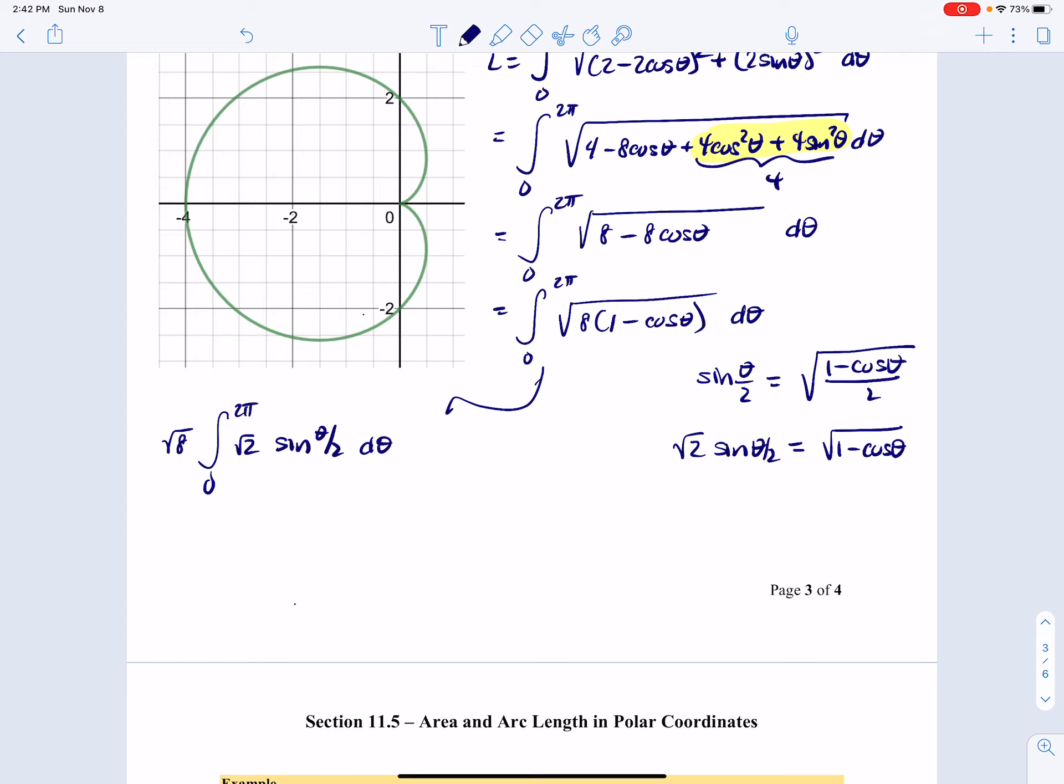Okay. Now, bringing these two together, square root of 8 times the square root of 2 is the square root of 16, so that's 4.